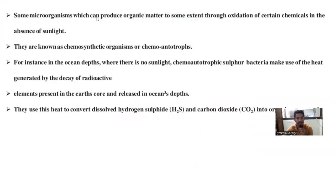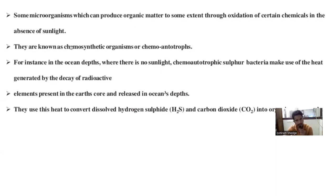Now we study about chemoautotrophs. Some microorganisms can produce organic matter through the oxidation of certain chemicals in the absence of sunlight. These are called chemosynthetic organisms or chemoautotrophs. These organisms also produce their own food — that is why they are called chemoautotrophic organisms.